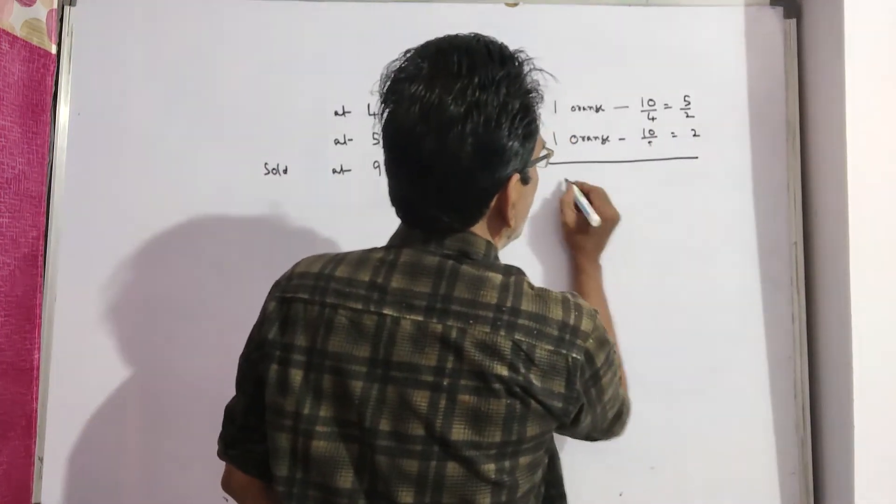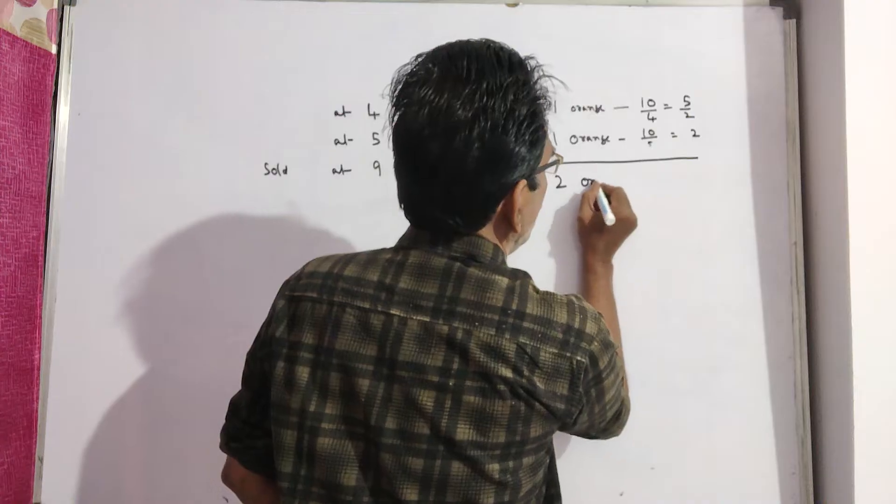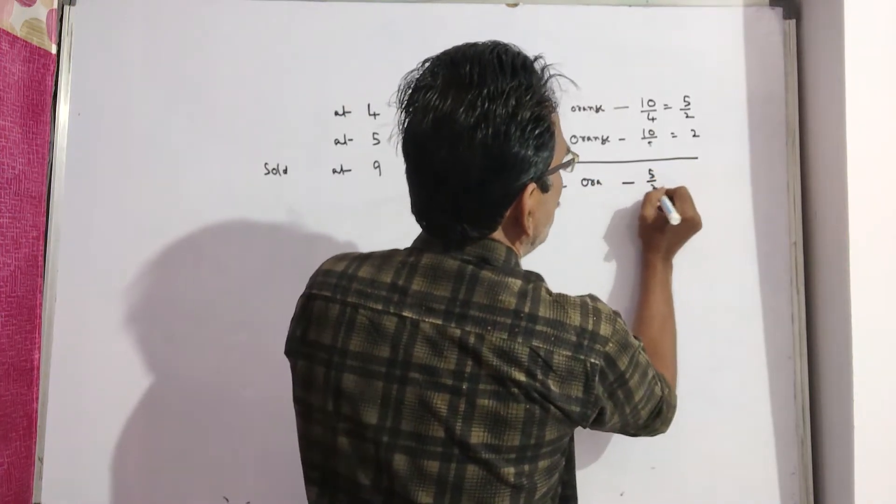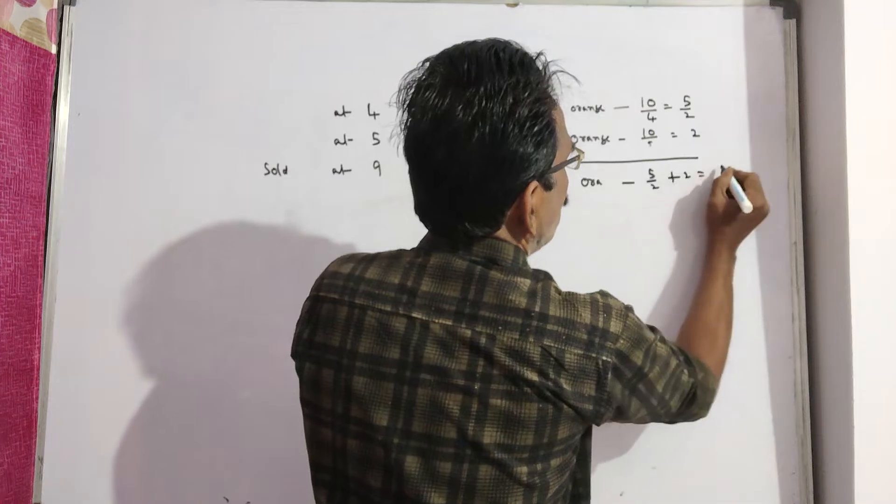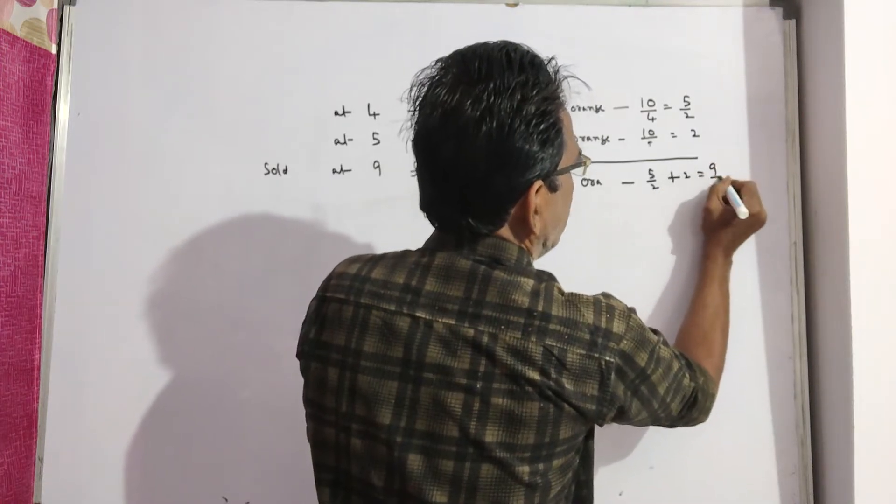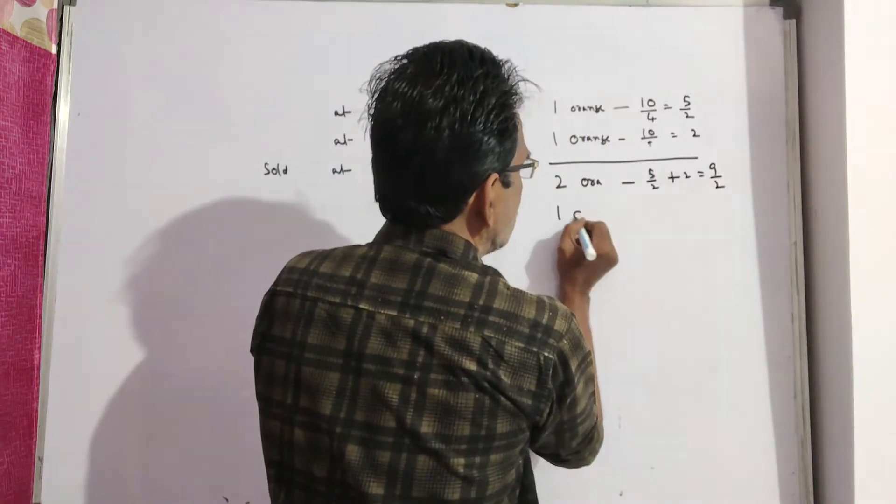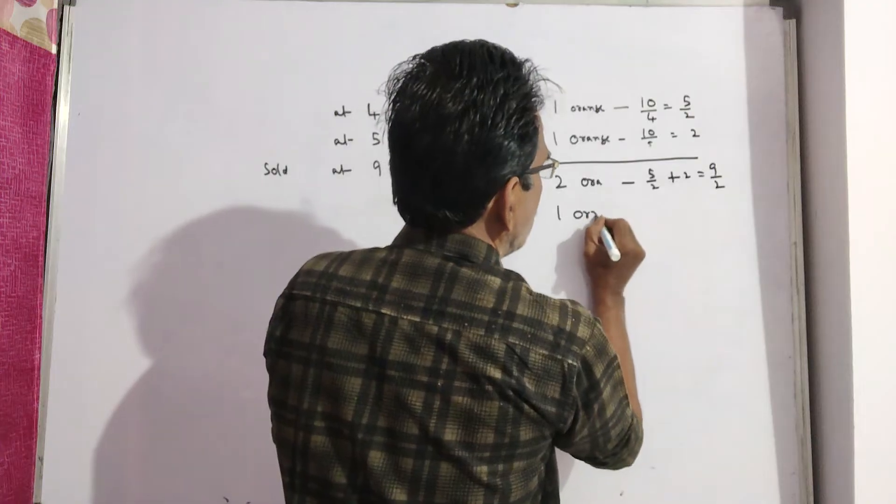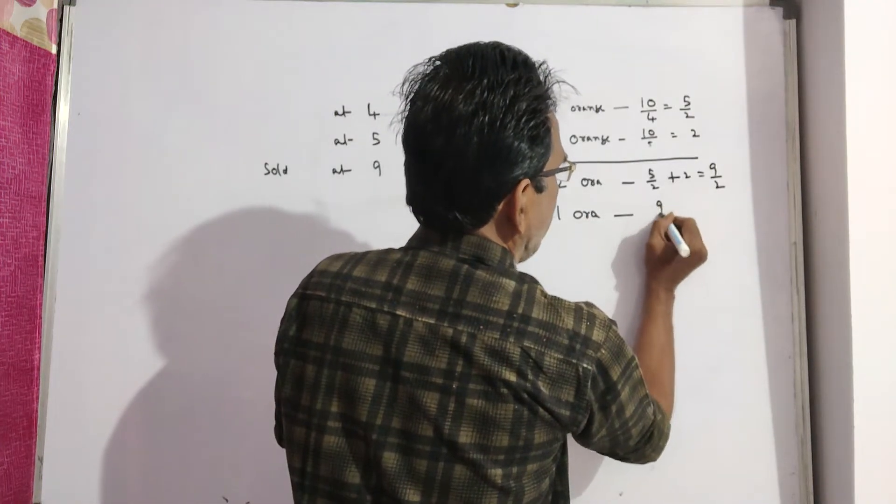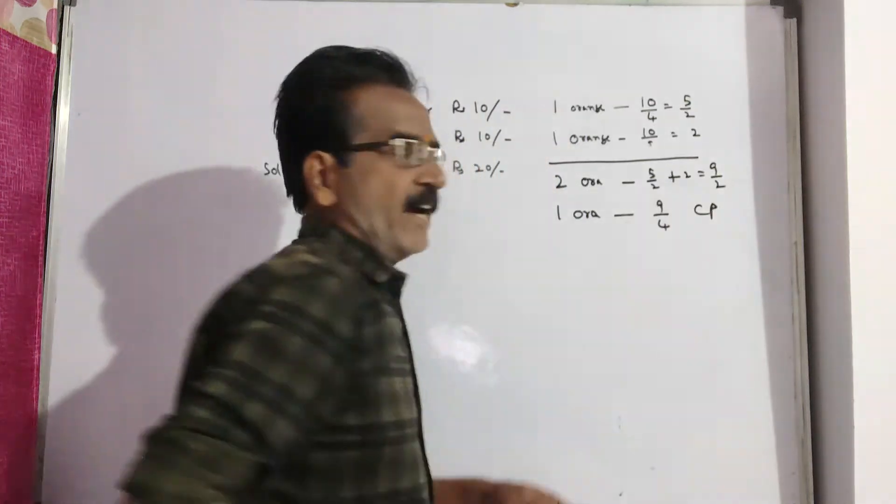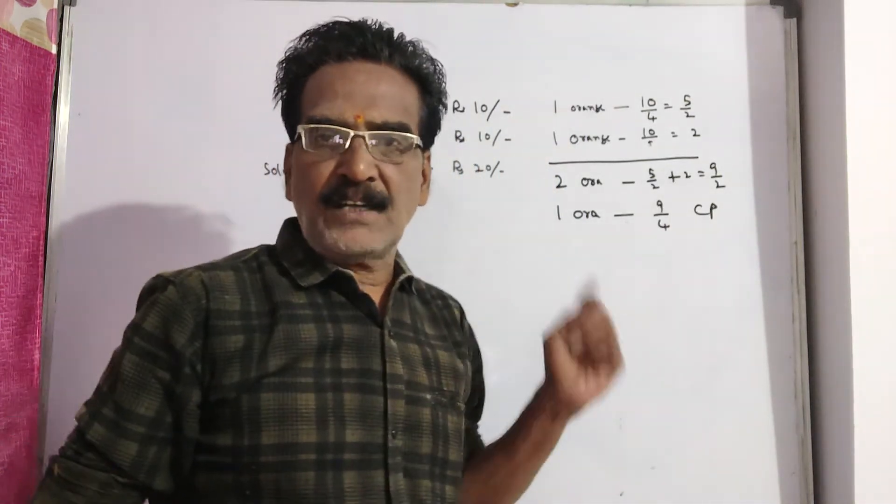So the cost of 2 oranges is equal to 5 by 2 plus 2, that is equal to 5 plus 4, 9 by 2. So the average cost of 1 orange, the average cost of 1 orange is equal to 9 by 4. This is the average cost price of the 1 orange.